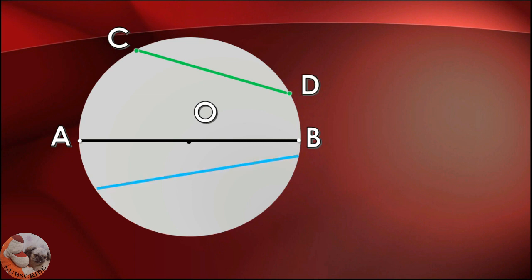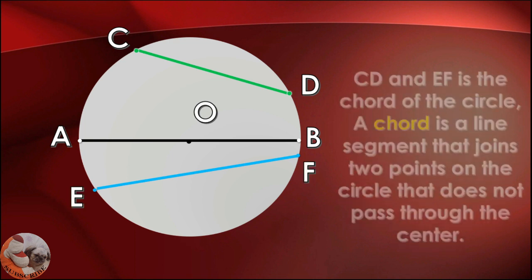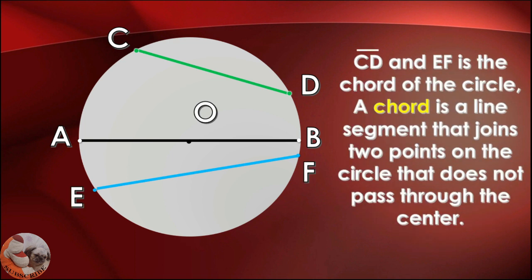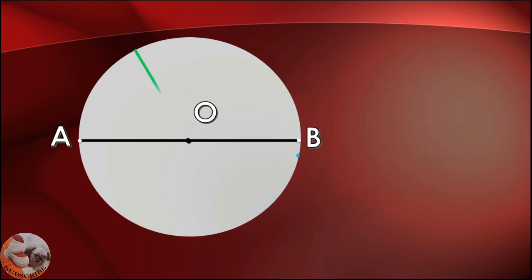Line segment CD and line segment EF are chords of the circle. A chord is a line segment that joins two points on the circle but does not pass through the center.